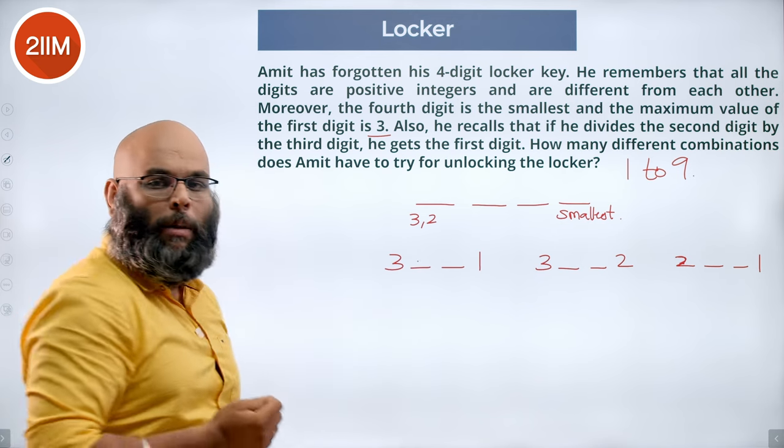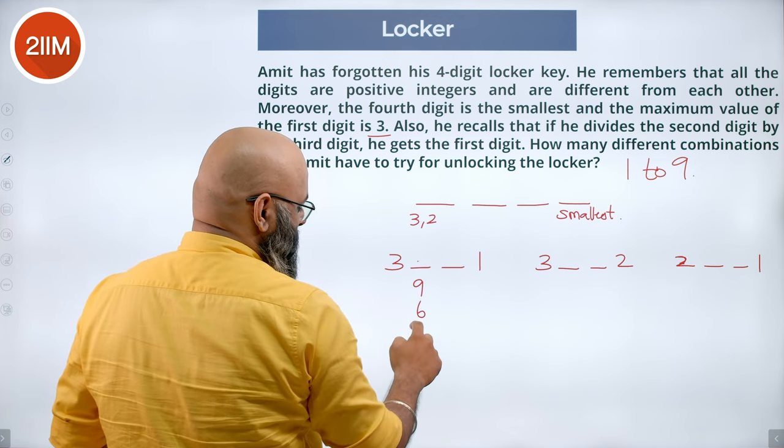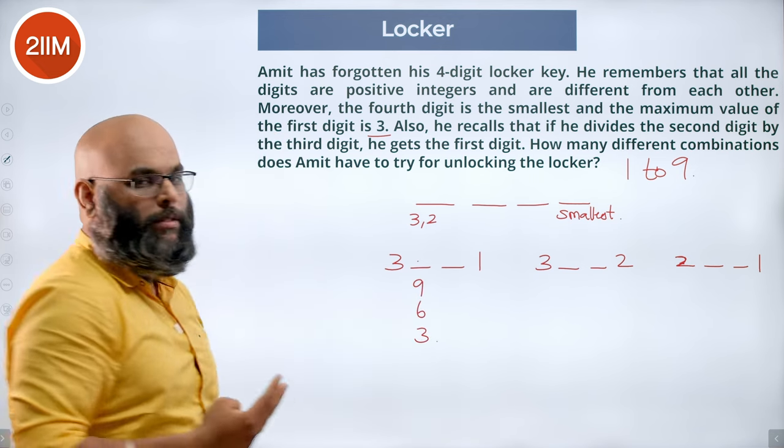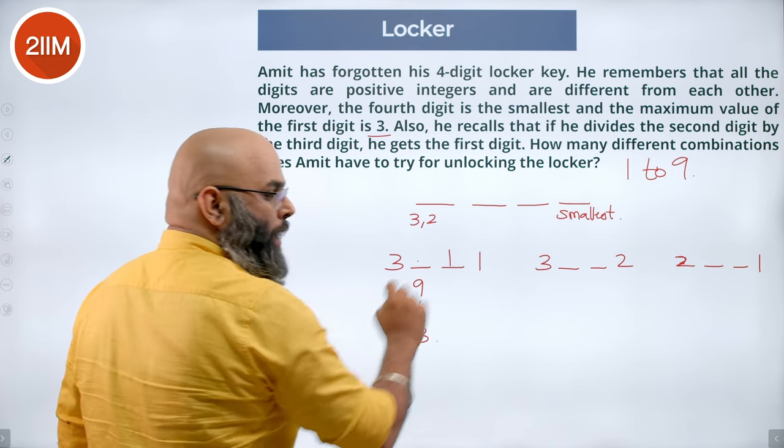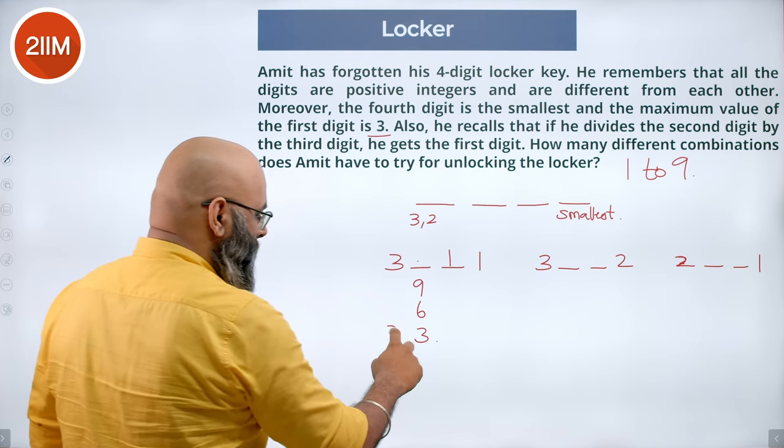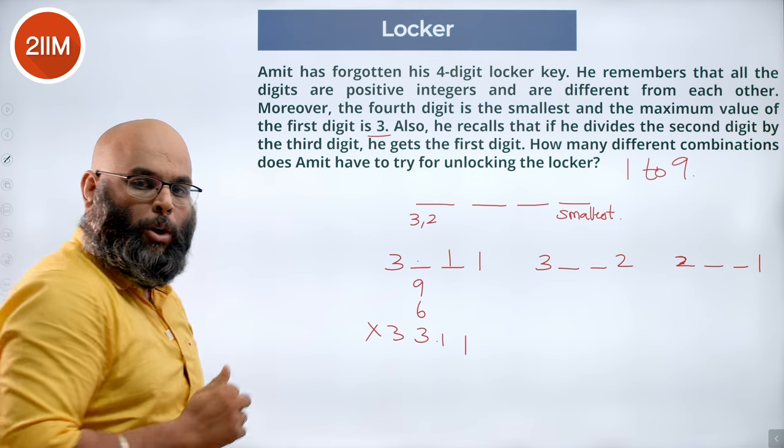So this number has to be a multiple of 3 in this case. So this could be 9, 6, or 3. The 3 cases. Now for me to have 3 here, this has to be 1, but we are repeating our digits. 3 3 1 1 would be the case, not possible because they all are different.